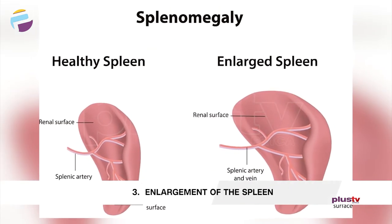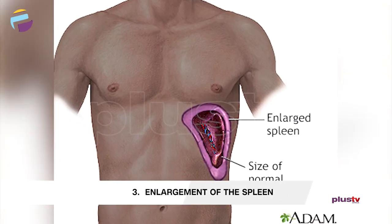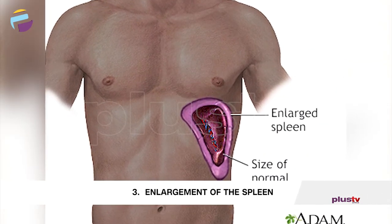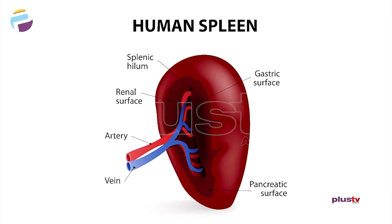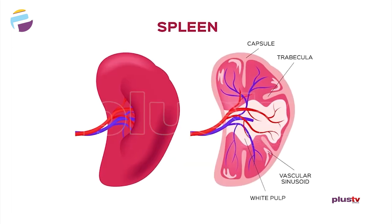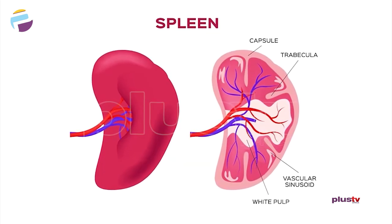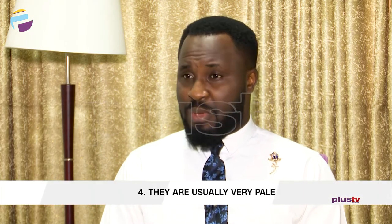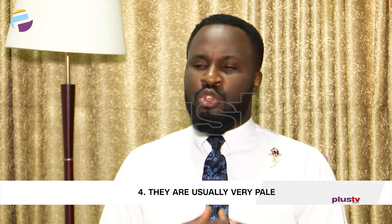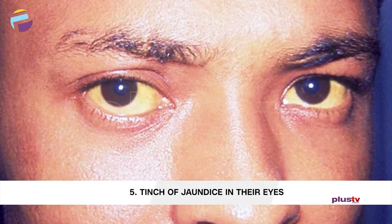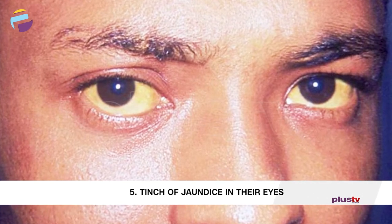Splenic sequestration is enlargement of the spleen, because the spleen serves as a storehouse or dumping site — it traps all the bad red cells and squeezes blood into it, making that area very tender and painful. You will also notice they are usually very pale. They can also have a tinge of jaundice in their eyes, appearing icteric, because there is a lot of breakdown of red blood cells leading to hyperbilirubinemia.